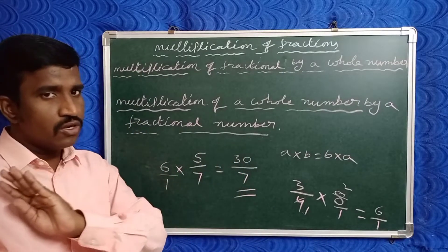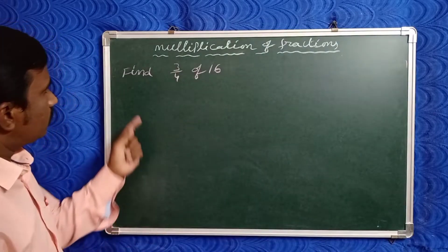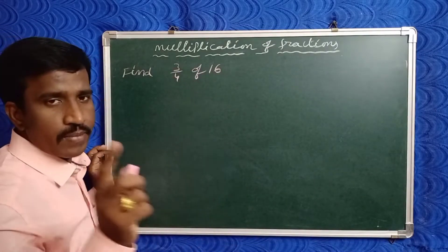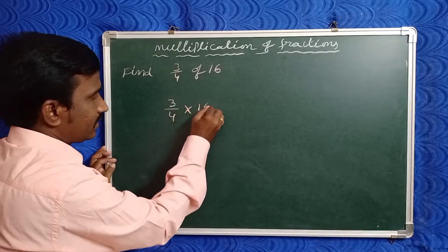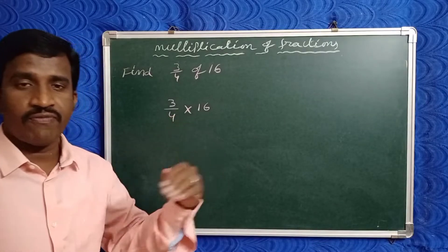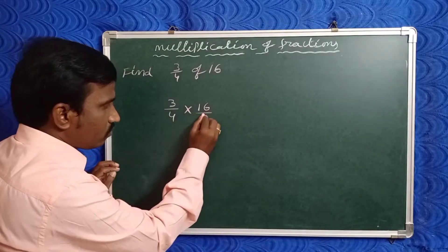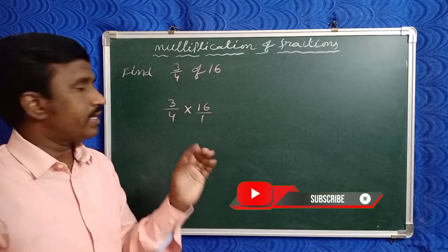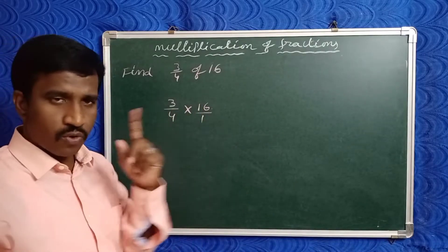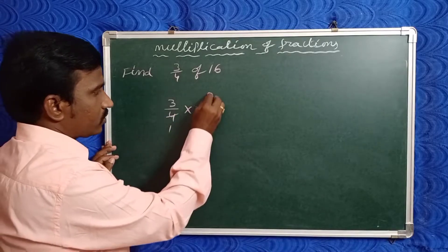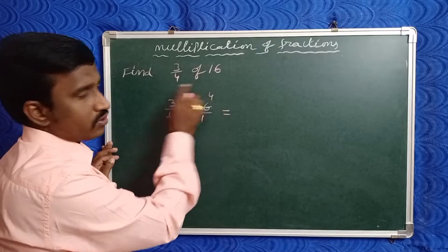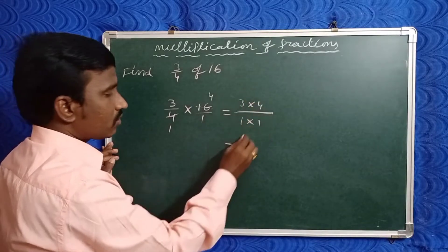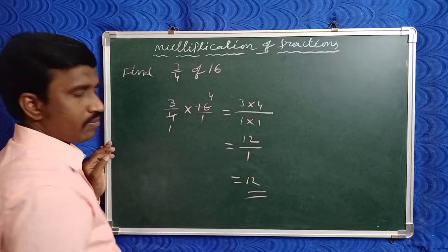Now take one example: find three by four of sixteen. Here 'of' means multiplication, so three by four into sixteen. Write sixteen as a fractional number: sixteen by one. Now four and sixteen both have a highest common factor of four. So four ones are four, four fours are sixteen. Multiply numerators: three into four is twelve, by denominators one into one is one. So the answer is twelve.